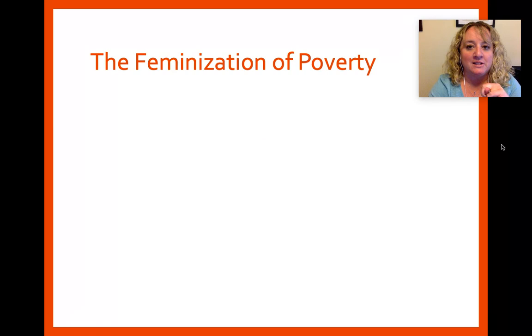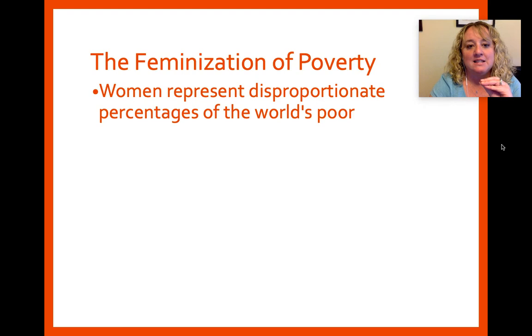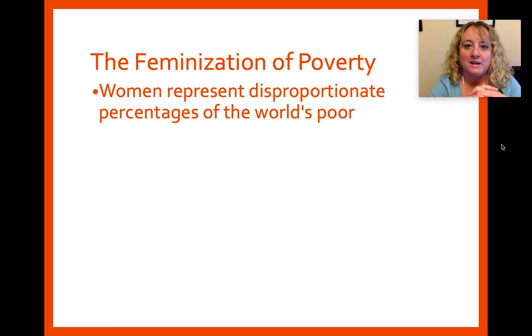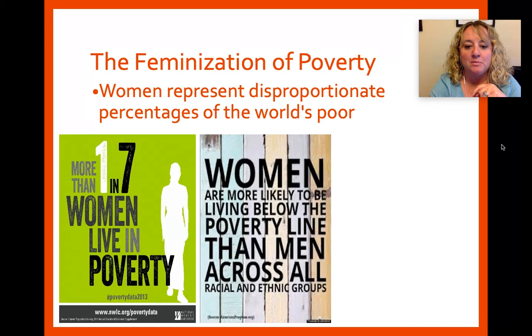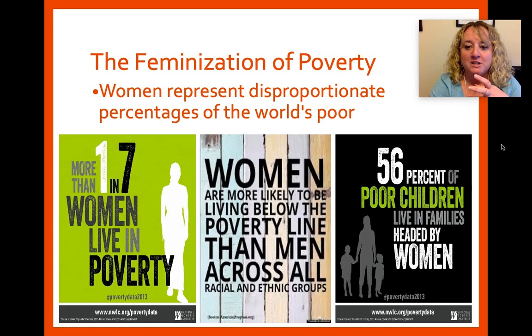Feminist theory relates to poverty through something called the feminization of poverty. Women represent a disproportionate percentage of the world's poor — it is a well-established fact. More than one in seven women live in poverty. Women are more likely to be living below the poverty line than men across all racial and ethnic groups, and 56% of poor children live in families headed by women.